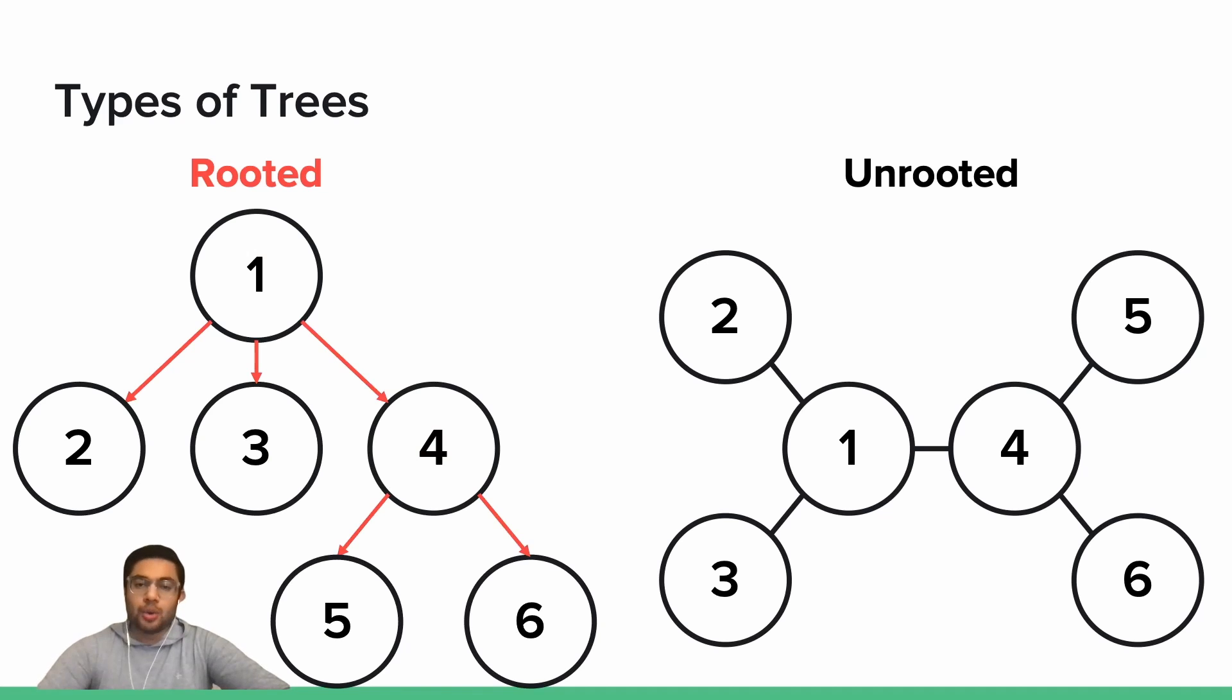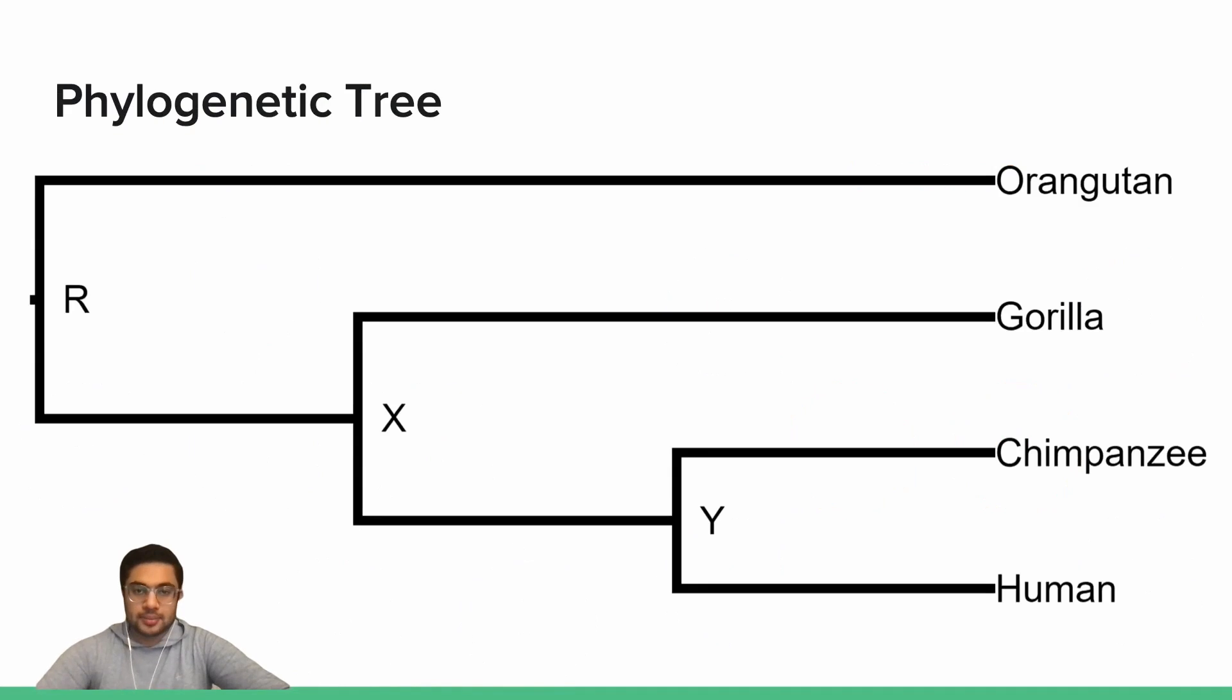In an unrooted tree, there is no notion of parents or children. Instead, a given node has neighbors. Any node with just a single neighbor is considered a leaf, and any node with more than one neighbor is considered an internal node. The leaves are two, three, five, and six, and the internal nodes are one and four.